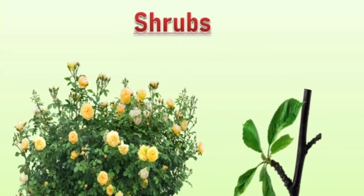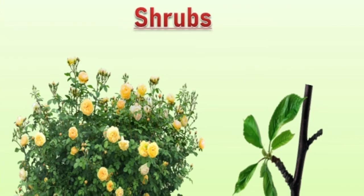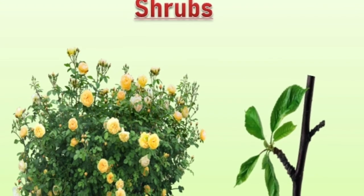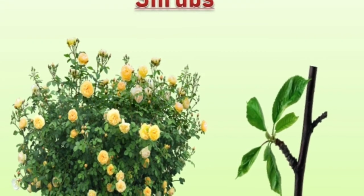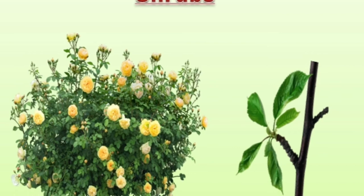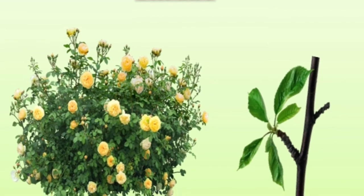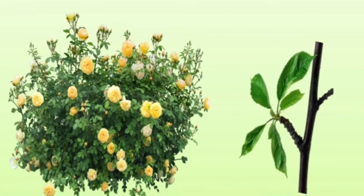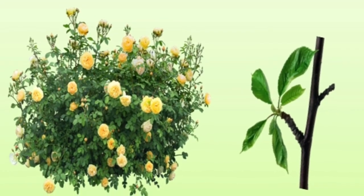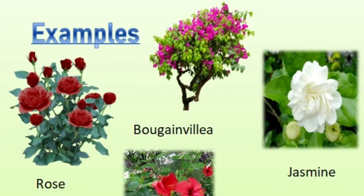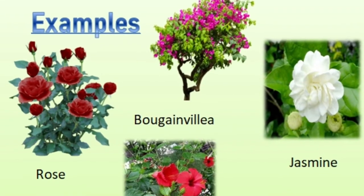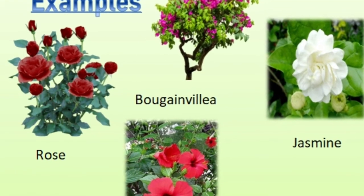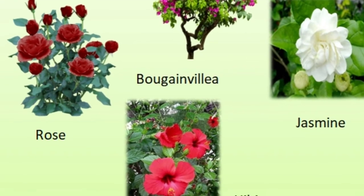Shrubs are medium sized, shorter and smaller than trees. They are bushy plants with thin brown stems. They live for a few years, or it depends on the species. Examples include Rose, Bougainvillea, Jasmine, Hibiscus, etc.